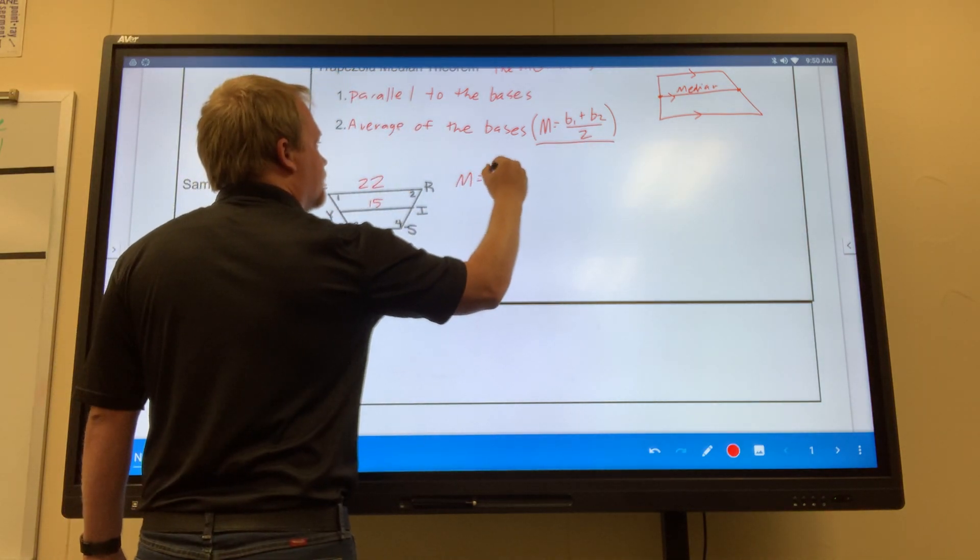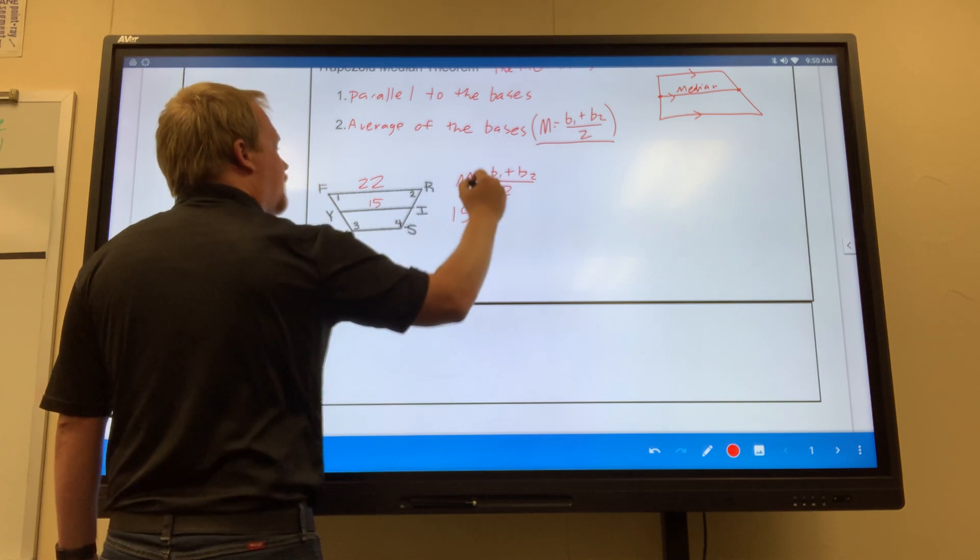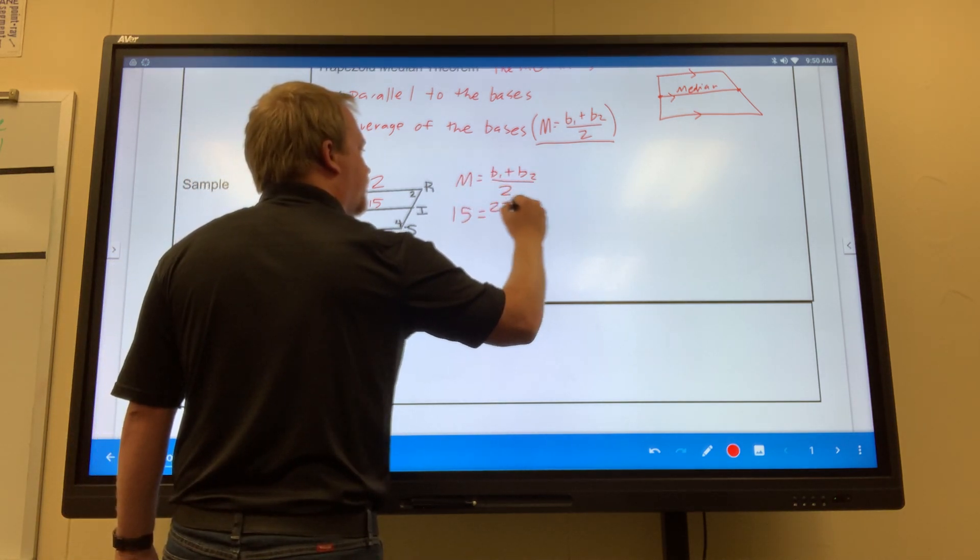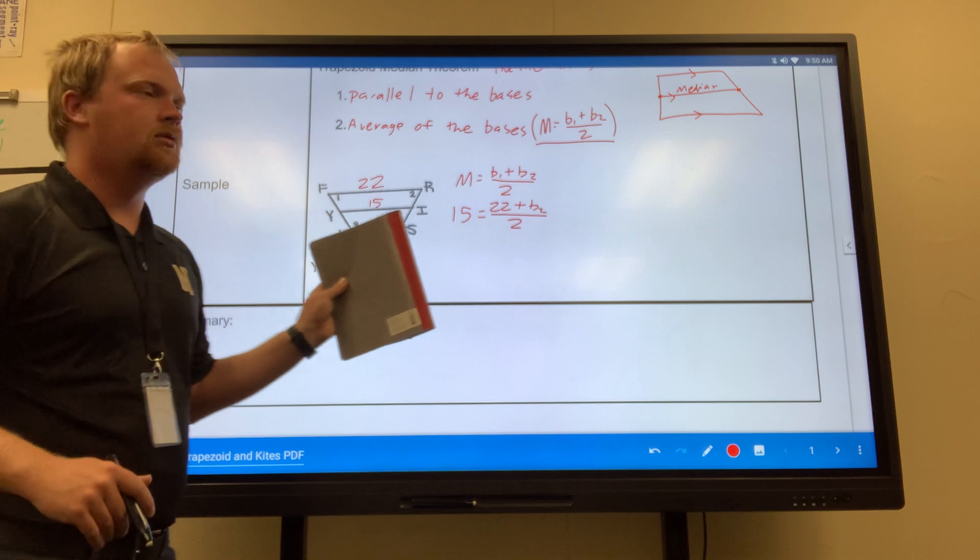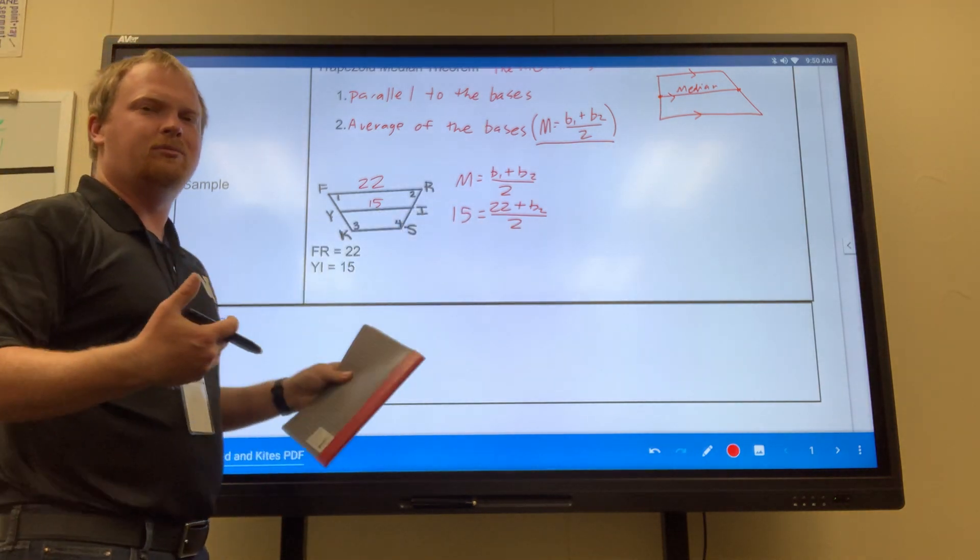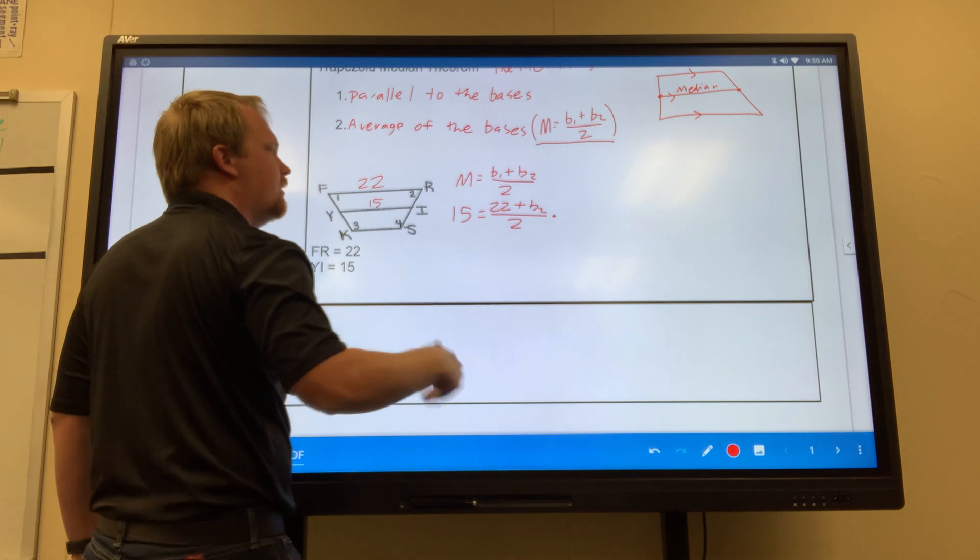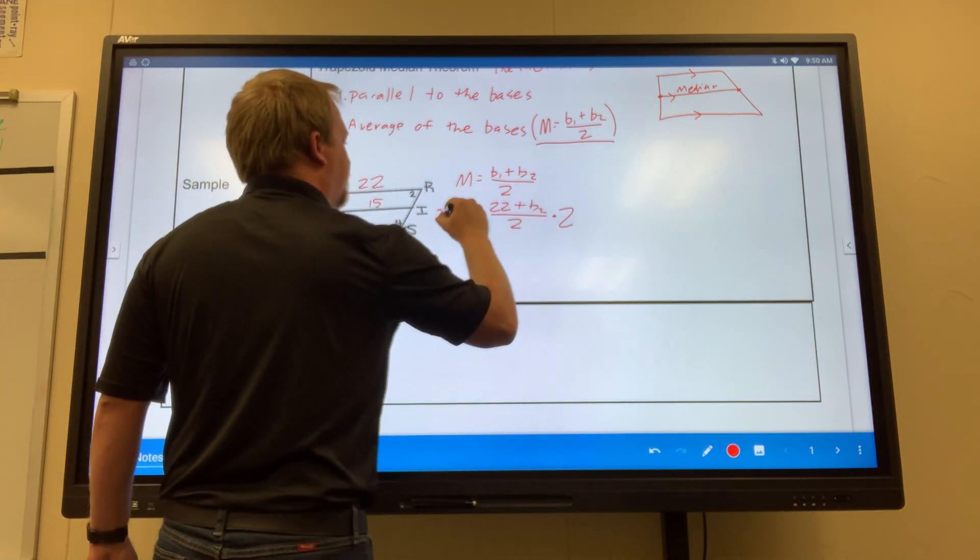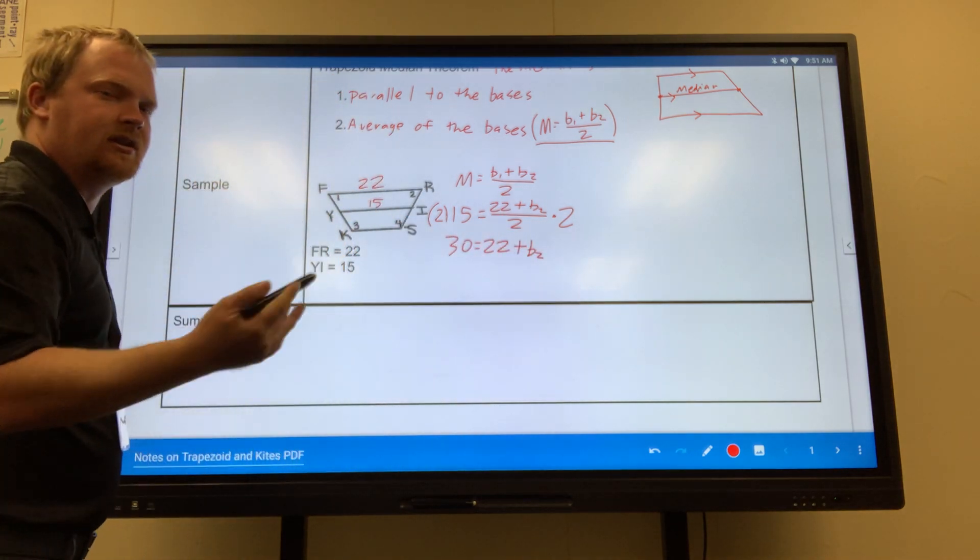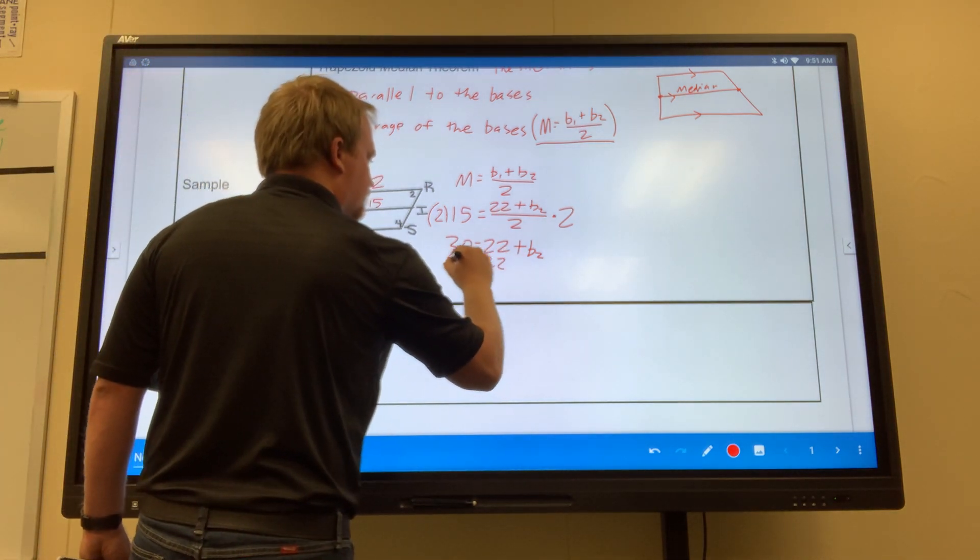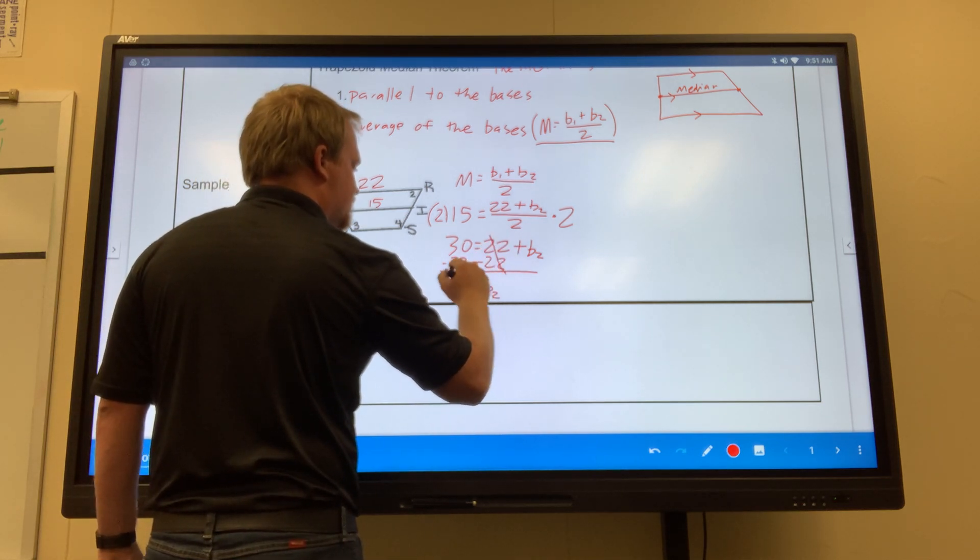So just to rewrite it, I know that the median is 15, my first base is 22, and I got to look for my second base here. Now, since this is dividing, I got to work my way backwards. So to work my way backwards in this, I got to multiply. So I got to multiply by 2. 30 equals 22 plus B2. Then I got to subtract the difference. So I subtract 22 from both sides.